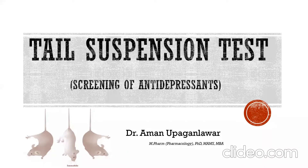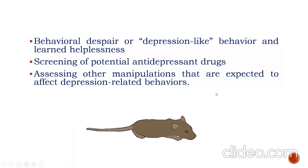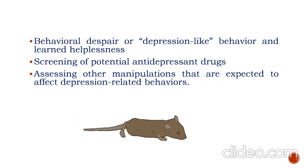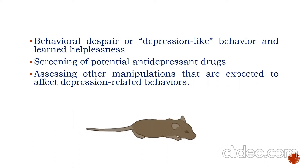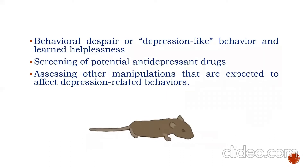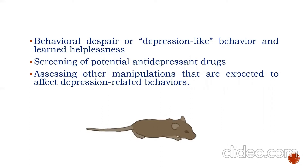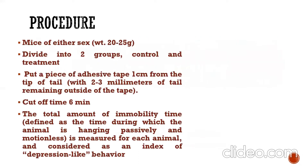Dear students, today we are going to discuss the tail suspension test, which is used to screen antidepressant drugs in rodents. This test is used to indicate behavioral despair or depression-like behavior and learned helplessness in rodents. These tests are also useful for screening potential antidepressant drugs and for assessing other manipulations that are expected to affect depression-related behavior in mice.